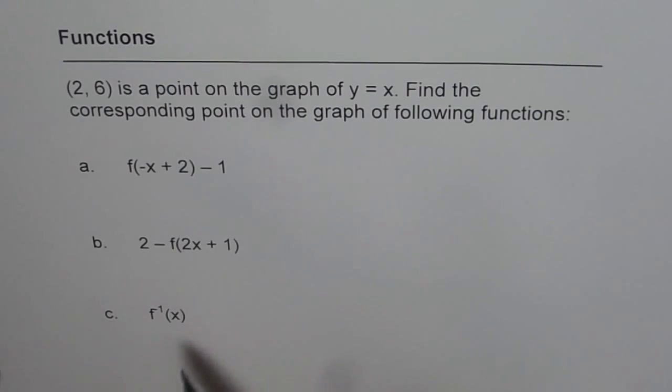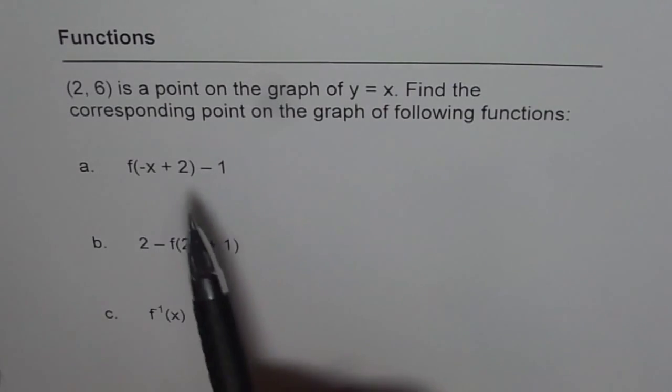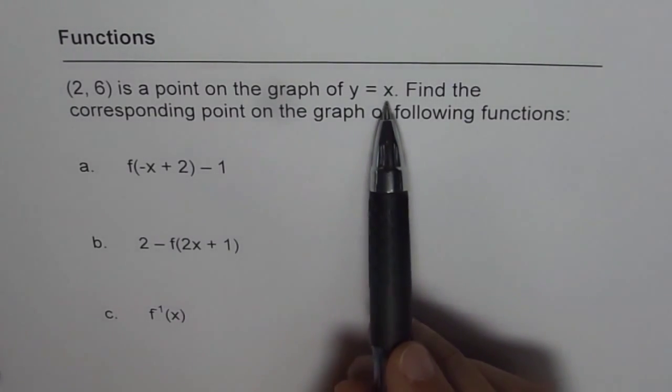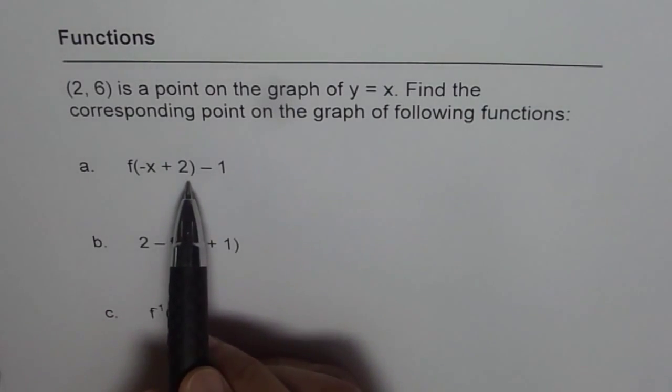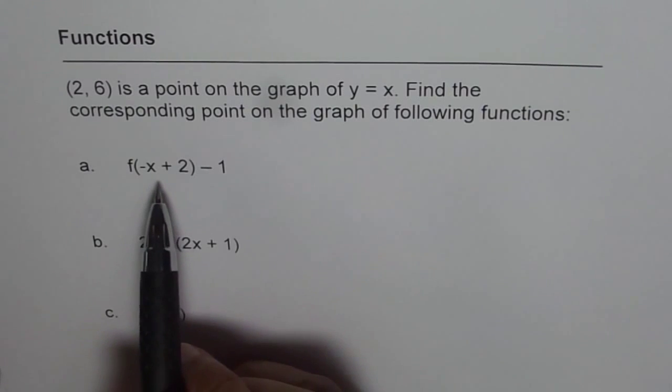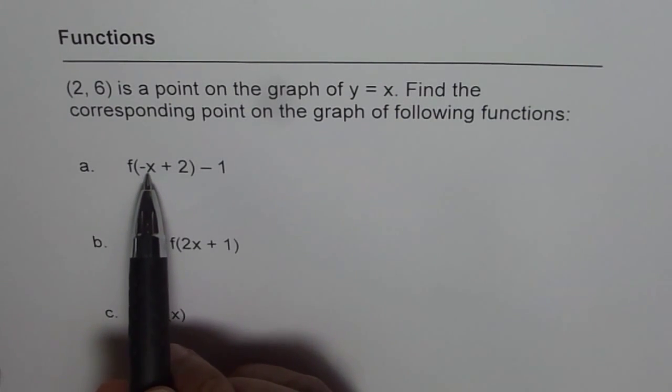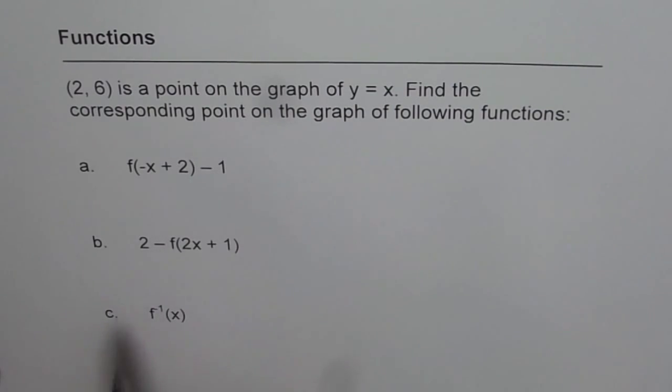These are different kinds of functions derived from the given function y equals x. The first one, if you see, is f(−x+2)−1. It is horizontally translated, horizontally reflected also, and vertically translated.